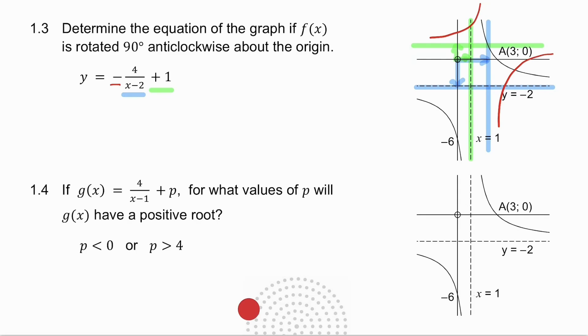In 1.4, I give you the hyperbola, but this time I have a plus p on the end. Now, my graph is not moving sideways at all. That hasn't changed. All it's doing is moving up or down. And I ask you for what values of p will g(x) have a positive root?